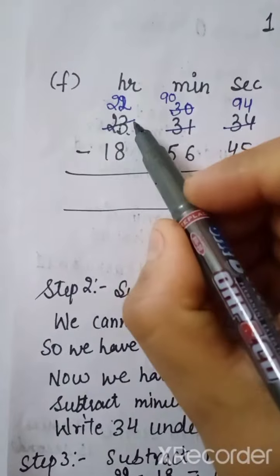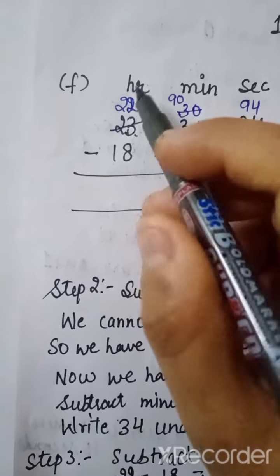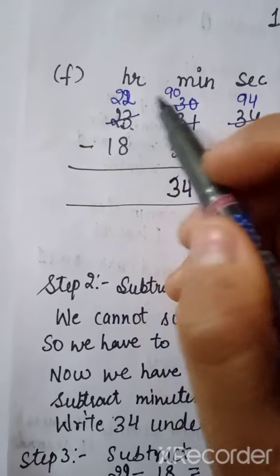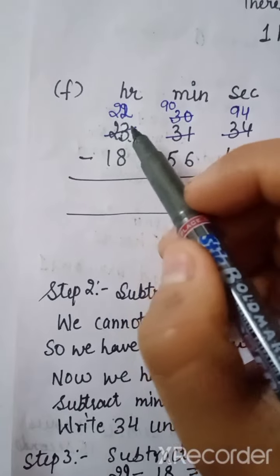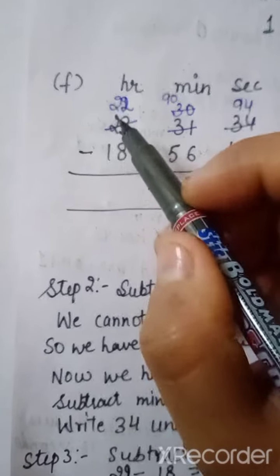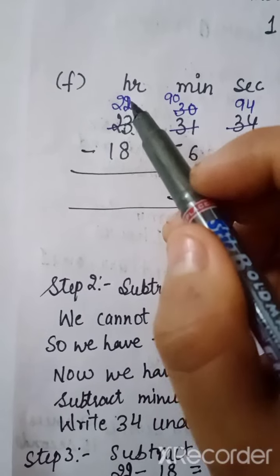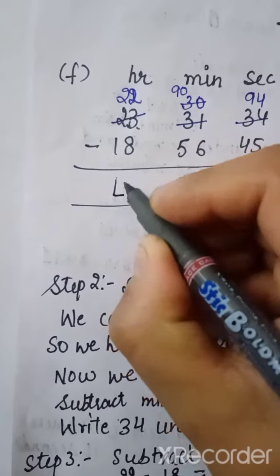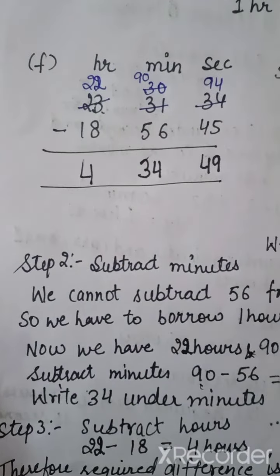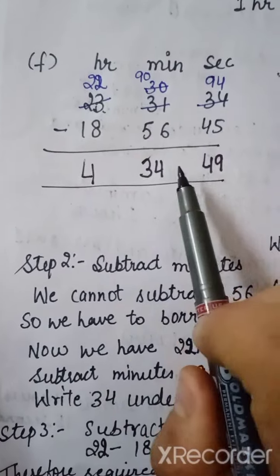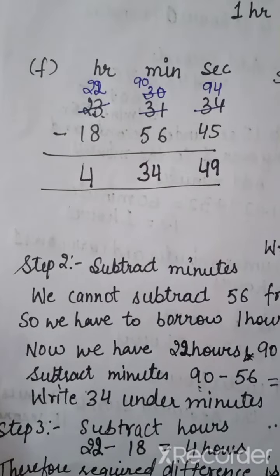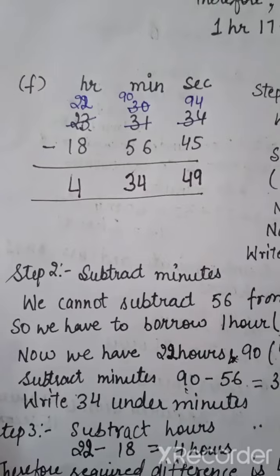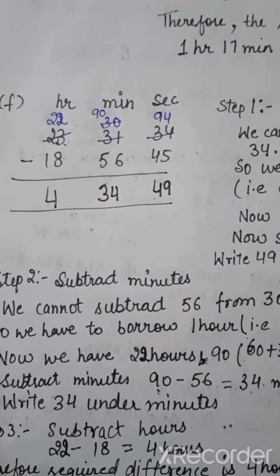We have taken 1 hour from the hours column, so 23 changes to 22. Now we subtract 22 minus 18, which equals 4. So the required difference is 4 hours, 34 minutes, and 49 seconds. I hope you all have understood it. Kindly practice Exercise 10.3 in your rough notebook.